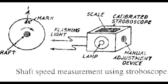To measure rotation speed, a mark is put on the surface — you can see the mark on screen — and the stroboscope light is flashed directly on the mark. The flashing frequency is adjusted until the mark appears stationary. At that condition, the speed is equal to the flashing frequency, as you can also see in this figure.